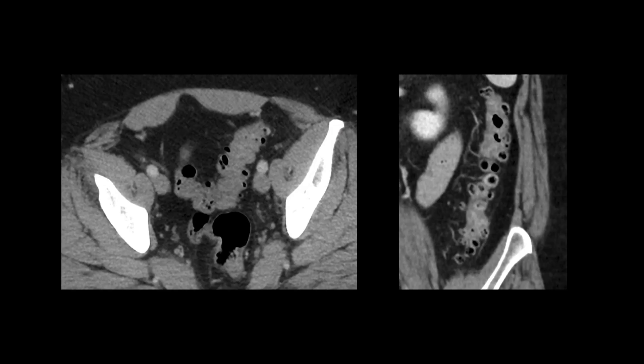These CT images show examples of diverticulosis, which is characterized by the presence of small, round, air-filled or dark outpouchings — which are diverticula — projecting from the colon wall.